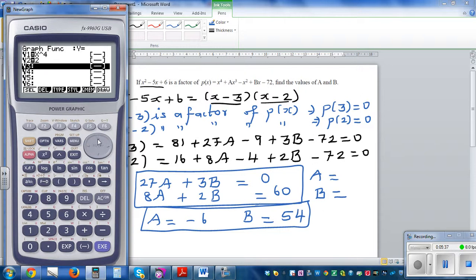x raised to 4 minus 6x cubed minus x squared. This is called a quartic equation, plus 54x minus 72.